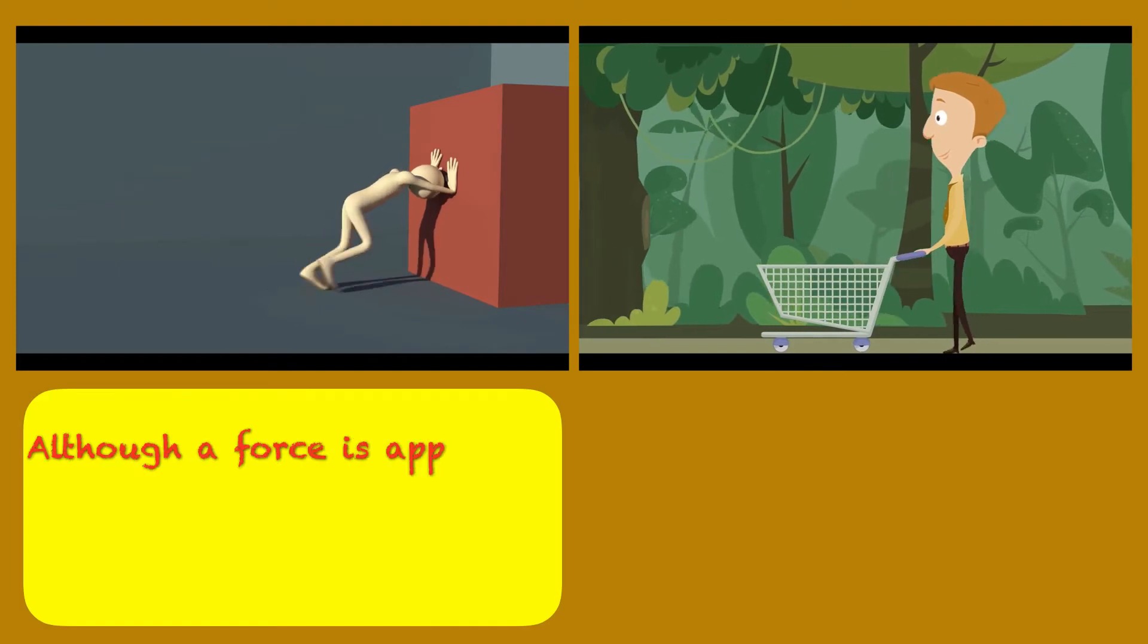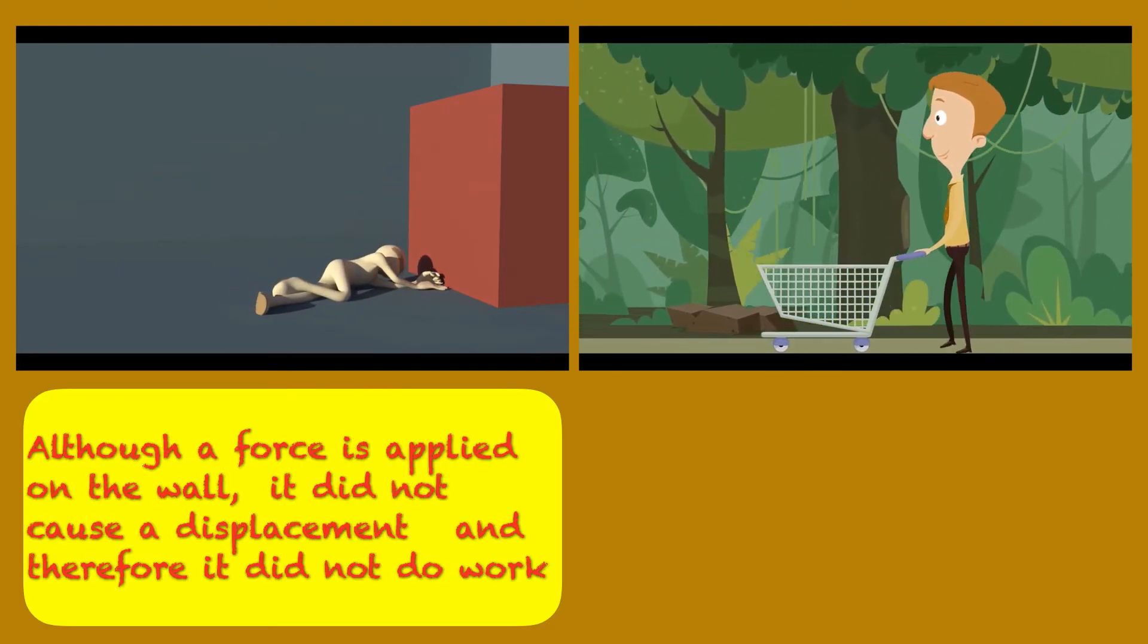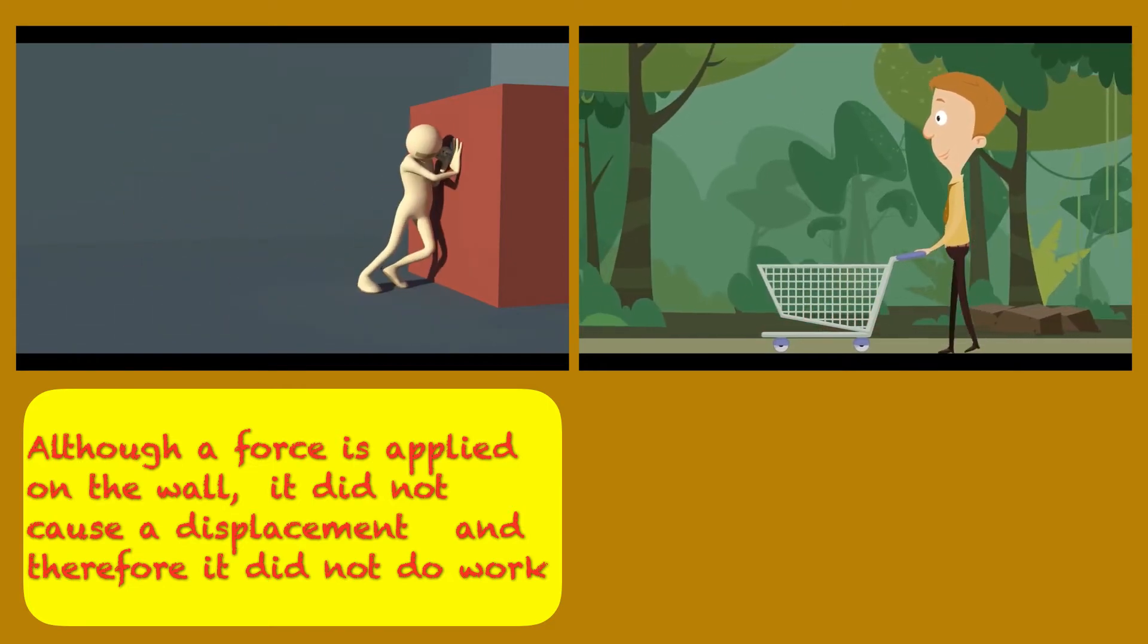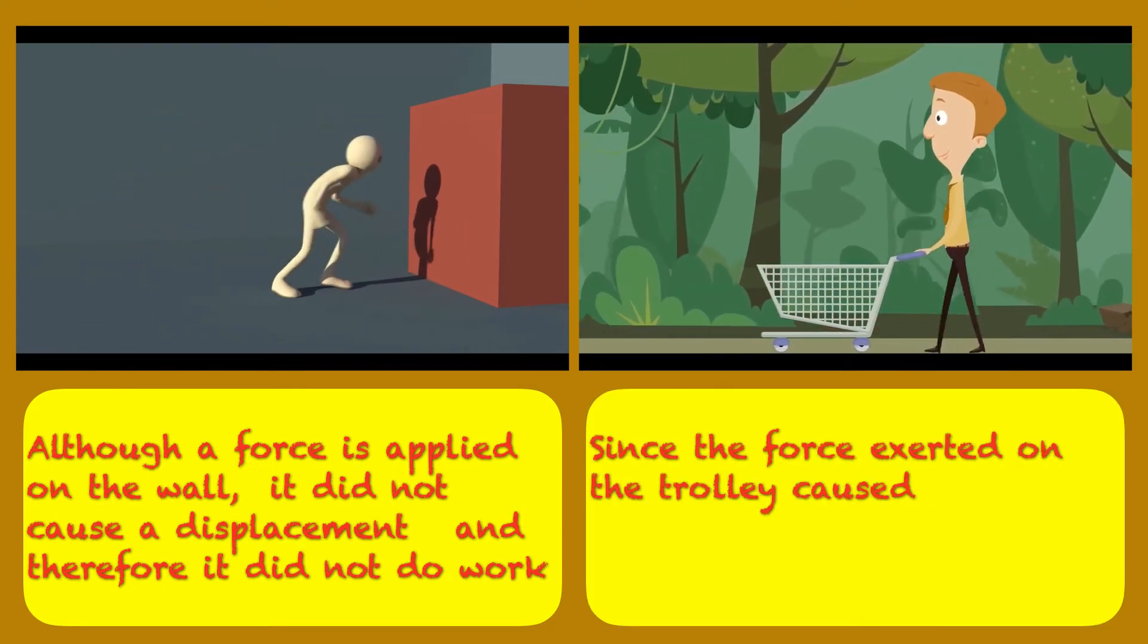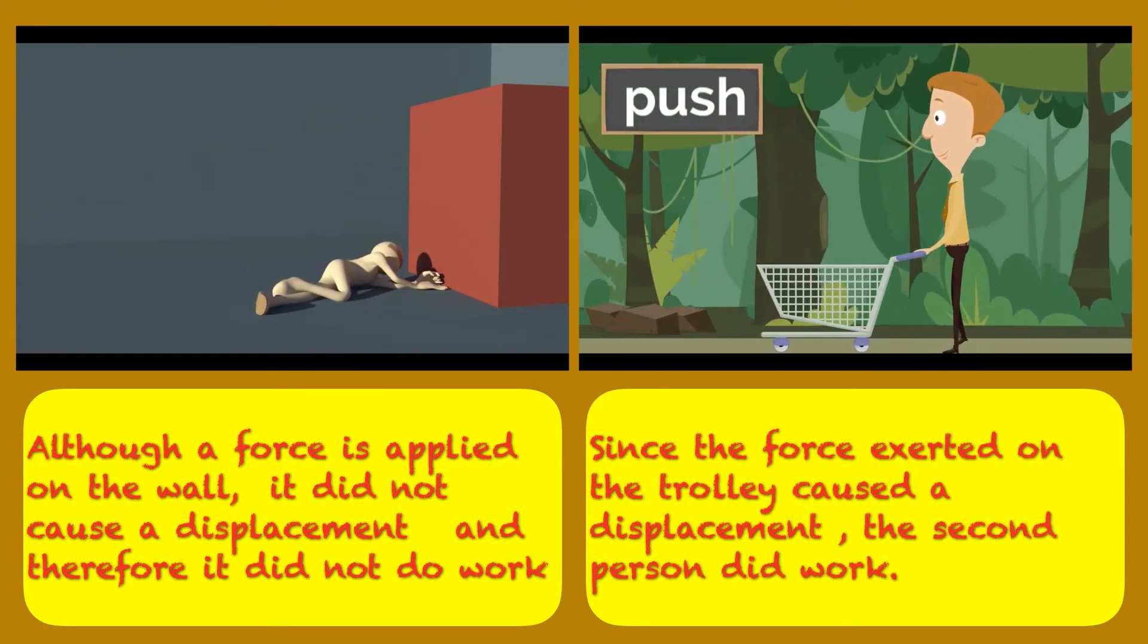Although the first person applied the force on the wall, it did not cause a displacement. And therefore, it did not do work. Since the force exerted on the trolley caused a displacement, the second person did the work.